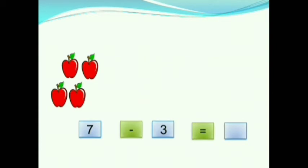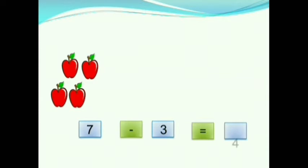After removing 3 apples, how many apples are remaining? 1, 2, 3, 4. 4 apples are remaining. So we will write 4. Therefore, 7 minus 3 is equals to 4.